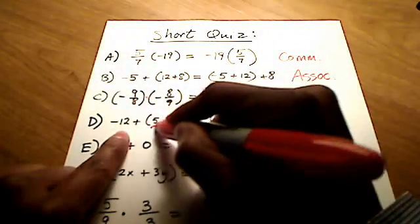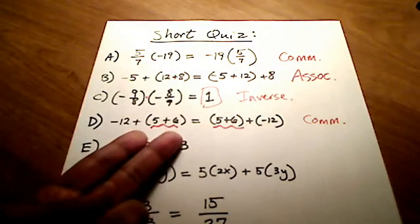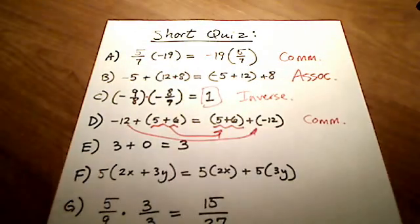And you can tell because, look, this stuff inside the parentheses didn't change. It's still 5 plus 6. So the order of these numbers was swapped around, all right? That was moved. These things were moved.